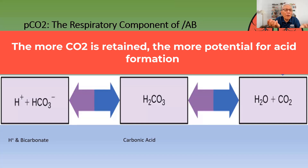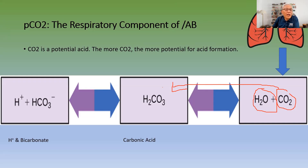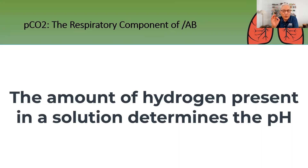Carbon dioxide is a potential acid. The more carbon dioxide there is, the greater the potential for acid formation. This is because carbon dioxide and water are both present in the lungs, and their combination has the potential to form carbonic acid. Carbonic acid can then dissociate into hydrogen ions and bicarbonate. Hydrogen ions are what determine the acidity of a solution — the more hydrogen ions present, the more acidic the solution.